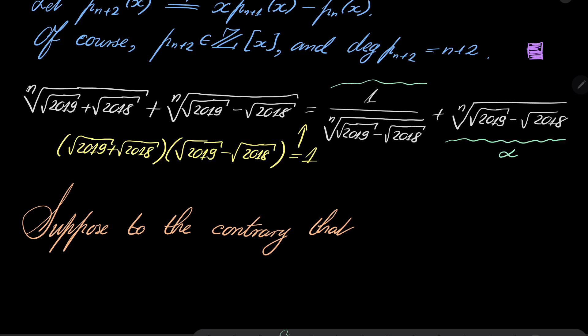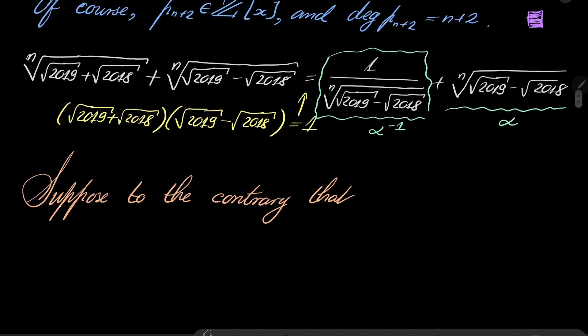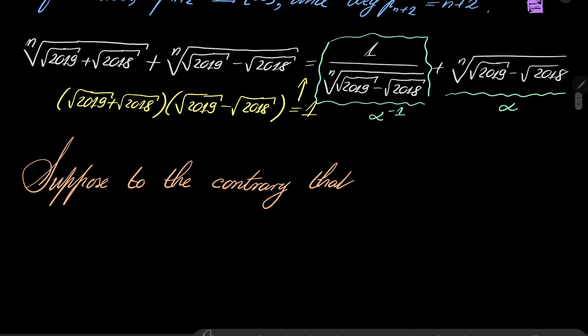Then, this number right here is 1 over α, or α^(-1). Now, let's suppose to the contrary, of course, this number depends on n, but let's leave it as it is. So now, suppose to the contrary that α + α^(-1) is rational.